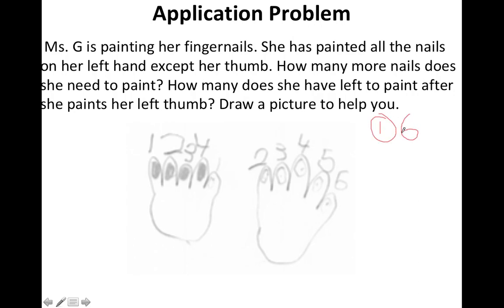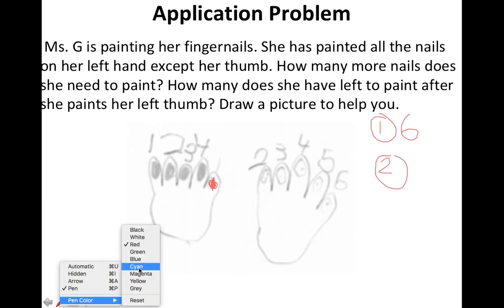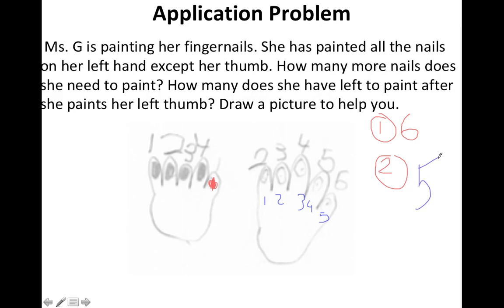For the second question, it says how many does she have left to paint after she paints her left thumb? I'm going to pretend to paint it with red nail polish, then switch color to show how many she has left to paint. Since I already painted this, that means I only have this hand to paint. I have one, two, three, four, five. So she has five fingers left to paint. The answer to question one is six because she didn't paint her left thumb, and the answer to question two is five because she painted her left thumb and whatever is remaining is what I wrote in blue pen.